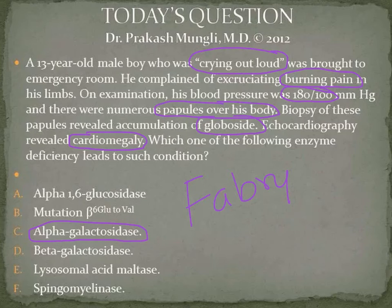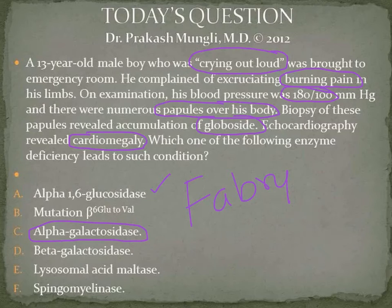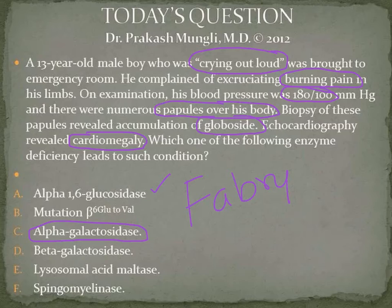Option A is alpha-1,6-glucosidase, a debranching enzyme in glycogen degradation. Acid alpha-1,6-glucosidase is a lysosomal enzyme whose deficiency gives rise to Pompe's disease. Beta-galactosidase enzyme deficiency gives rise to Krabbe disease. Lysosomal acid maltase deficiency is another cause of Pompe disease. Sphingomyelinase enzyme deficiency gives rise to Niemann-Pick disease.